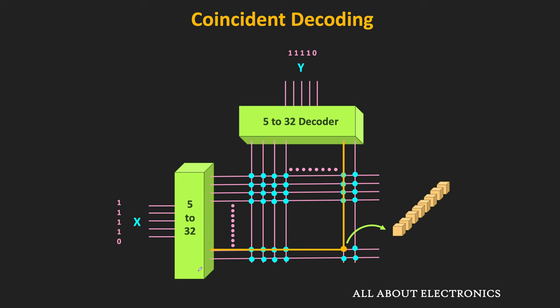In actual RAMs, because of their very large capacity, address decoding is arranged in a two-dimensional array, and for even larger memories multiple such arrays are used. To reduce the pin count of the memory package in large memories, the address multiplexing technique is used.